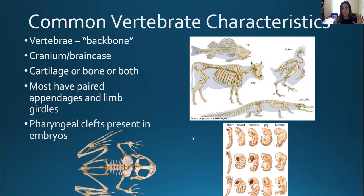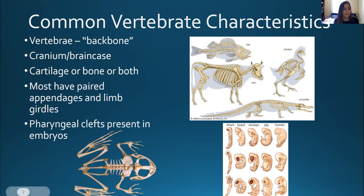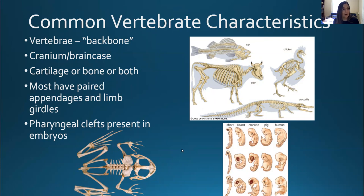Some common vertebrate characteristics: it's important to understand what all vertebrates share before talking about what specific groups have. All vertebrates have a vertebral column — a backbone or spine — which you can identify across all the different groups. I found a nice figure showing this, though it excluded amphibians, so I added a frog skeleton. They also all have a brain case or cranium. Fish brains are very small, so their cranium is very small as well. All vertebrates have cartilage or bone or both — sharks have just cartilage, others have just bone, and many like us have both.